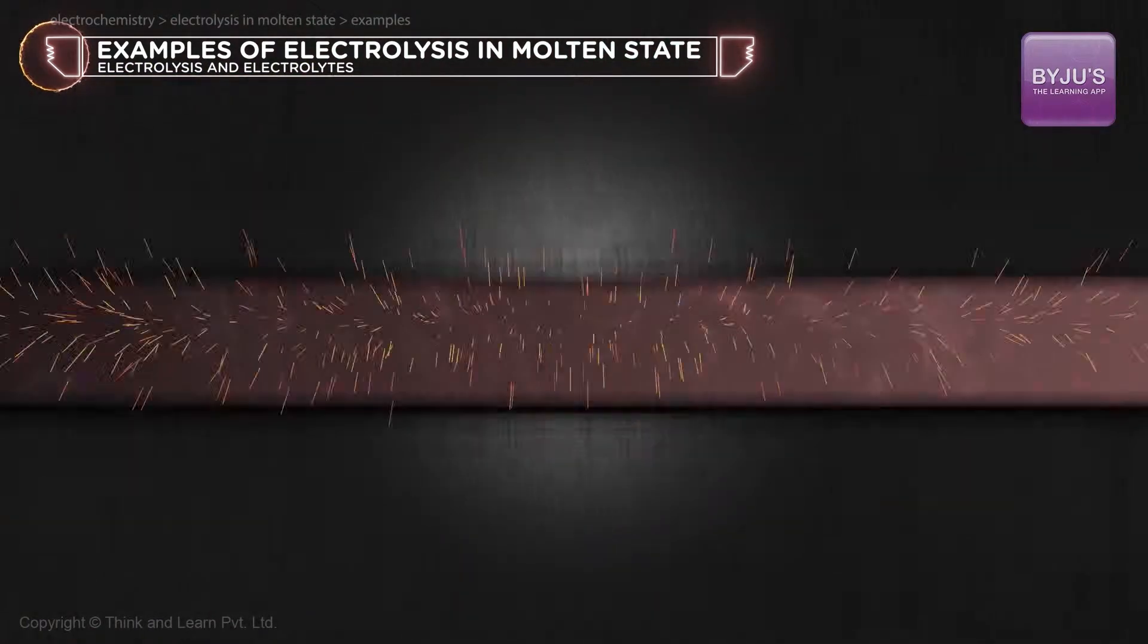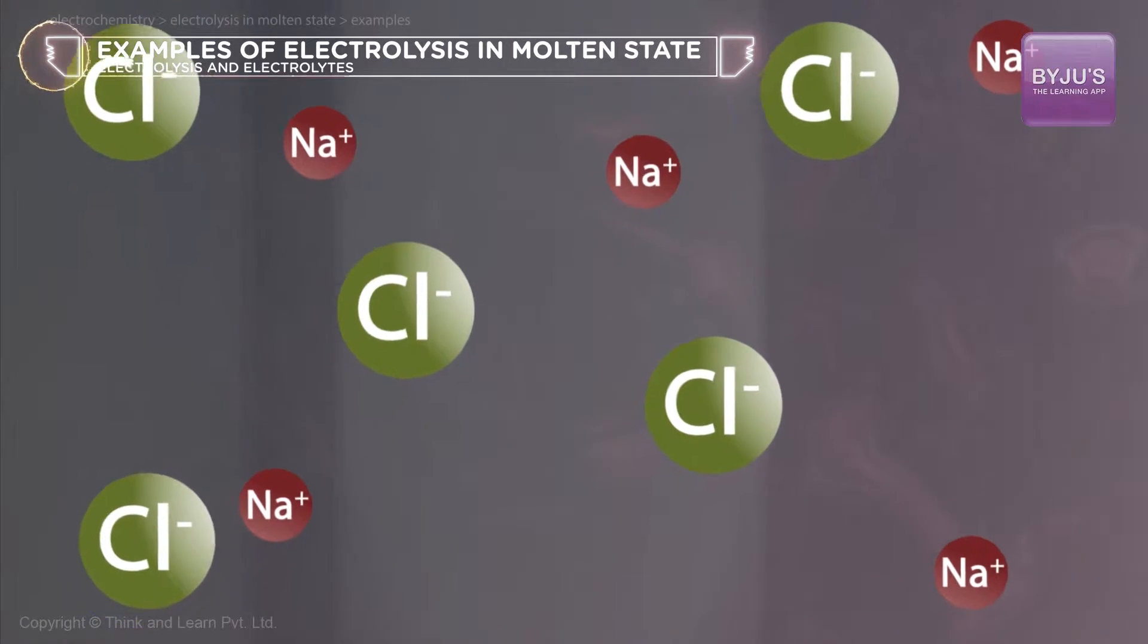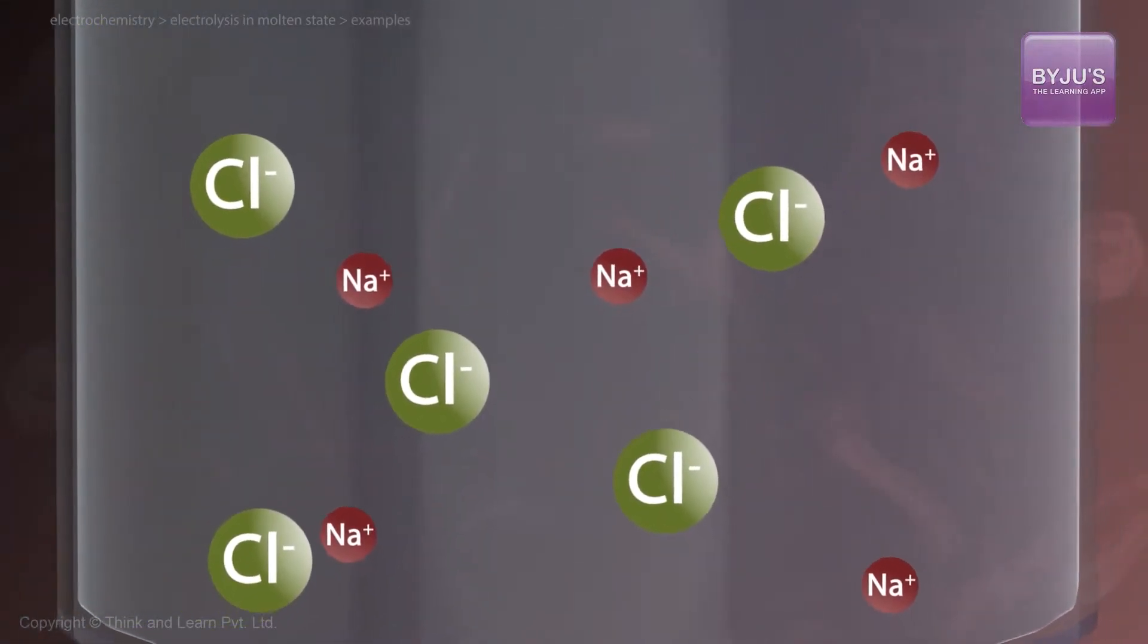Let us first look at the electrolysis of molten salts of some compounds. Molten NaCl, which is an electrolyte, means free sodium ions and chloride ions. So molten NaCl conducts current with the help of these ions.